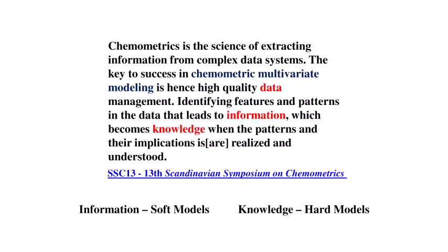When I started studying chemometrics, I got some information from the International Chemometrics Society. Chemometrics is the science of extracting information from complex data systems. The key to success in chemometric multivariate modeling is high-quality data management — identifying features and patterns in the data that leads to information, which becomes knowledge when the patterns and their implications are realized and understood. In our case: information from infrared intensities gives soft models, while knowledge about molecular electronic structure provides hard models.